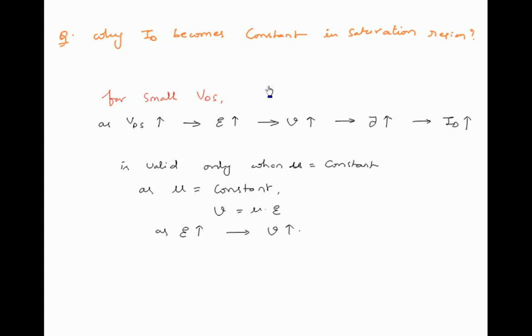For small VDS in the active region, as VDS increases, electric field increases. As electric field increases, drift velocity of charge carriers increases. As drift velocity increases, current density of charge carriers increases, so current increases. Therefore, ID is increasing in the active region.